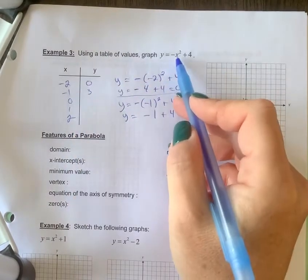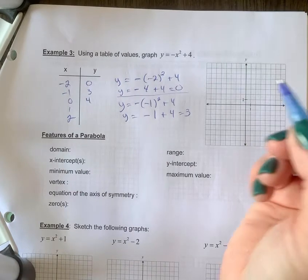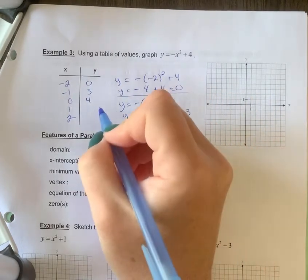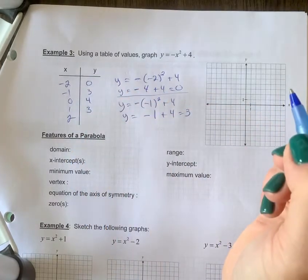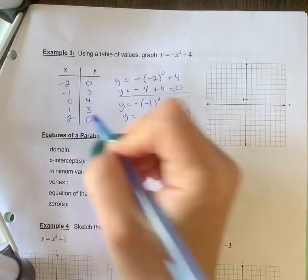Plug in 0, 0 squared is 0, so 0 plus 4, you're going to get 4. Plug in 1, similar stuff is going to happen here. You're going to get negative 1 plus 4 equals 3. Plug in 2, 2 squared is 4, so negative 4 plus 4 is 0.